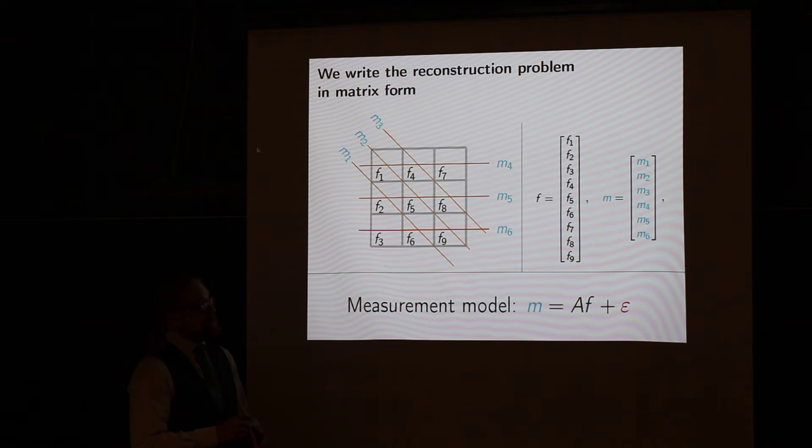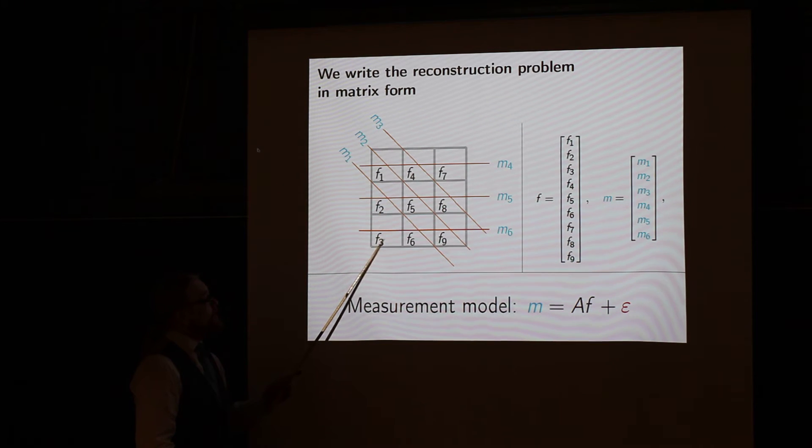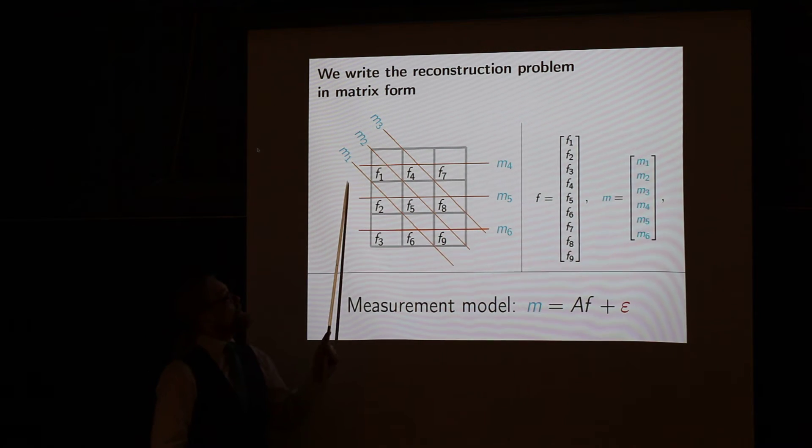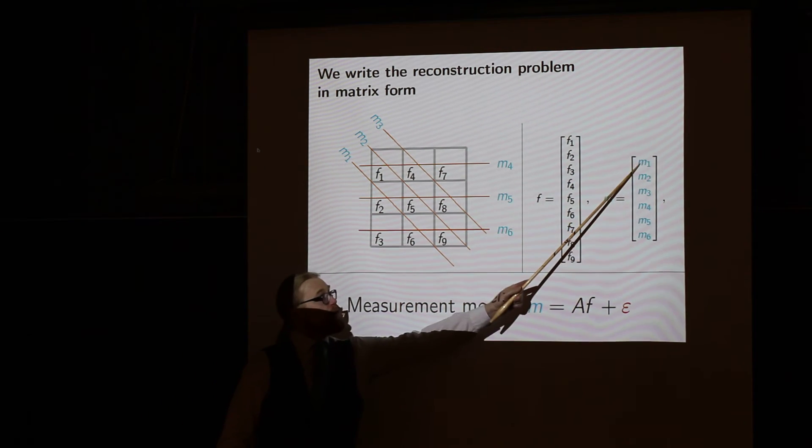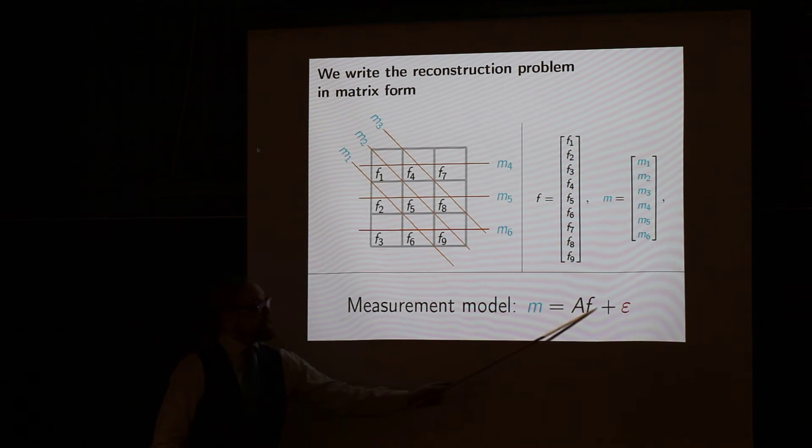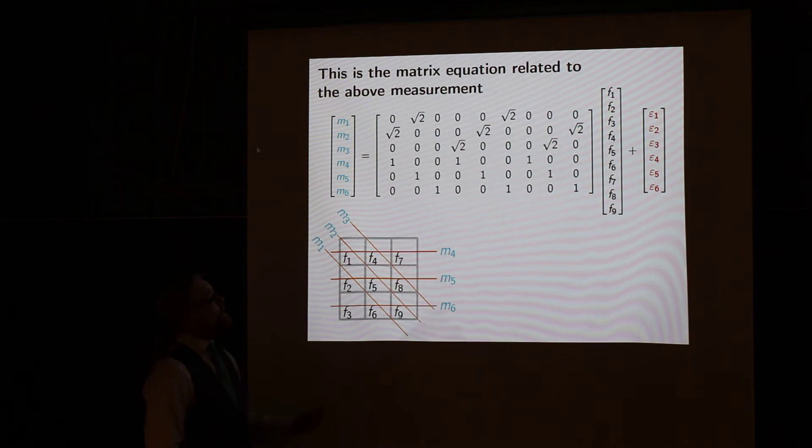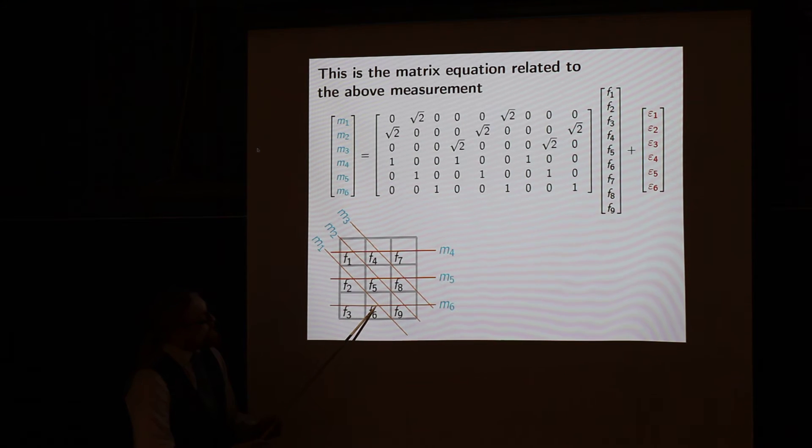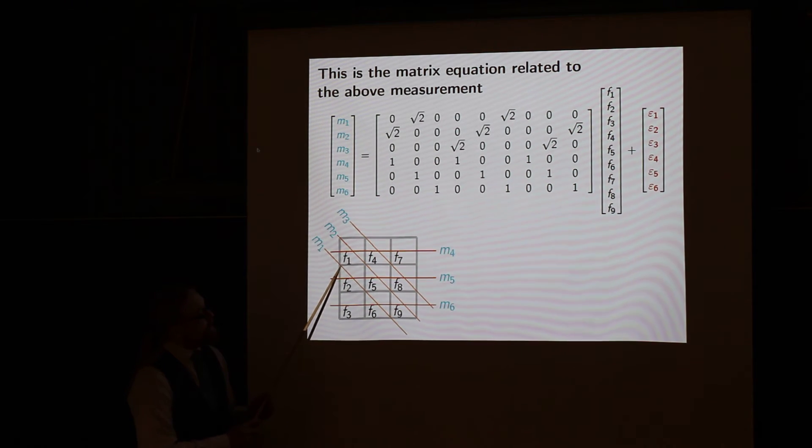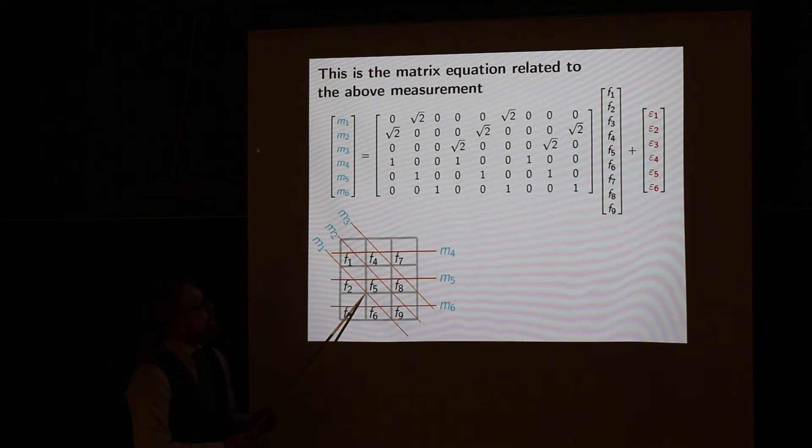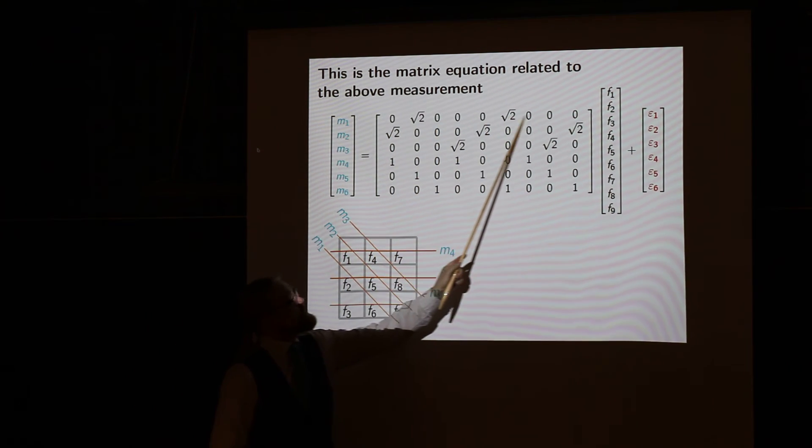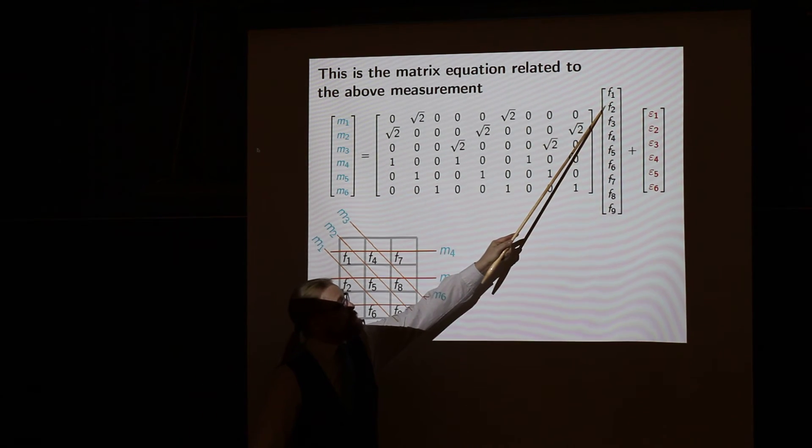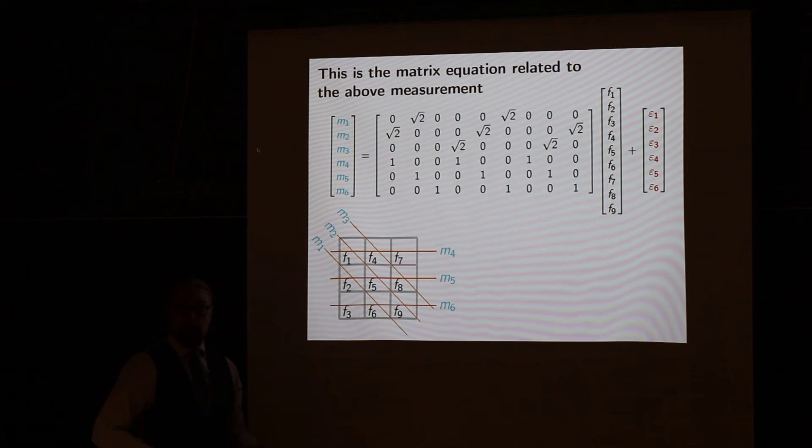So how to build the computational model in this case? First of all we need to give names to these unknown values so they will make up the vector f. The sums we just saw along these lines, let's collect them in the M vector. Then we want to build this M equals Af model. And the matrix A in this case looks like this. Let's just see for example for M1. M1 x-ray is traveling inside pixels 2 and 6 and the length in each of them is square root of 2. So M1 is here, the first row of the matrix A concerns M1 and there we have the square root of 2 in positions 2 and 6, hitting f2 and f6 coming from the geometry here. This is how the matrix is built.